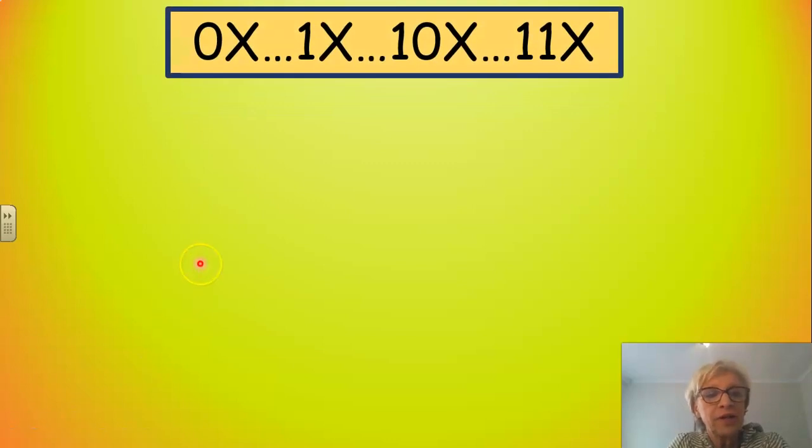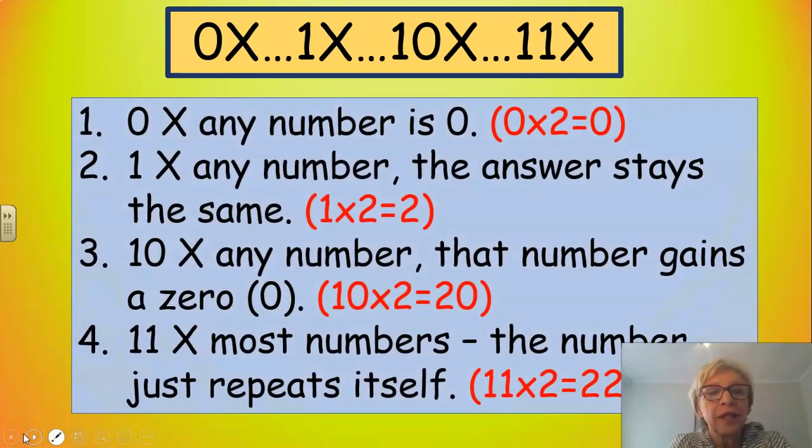So to summarize, multiplying by 0, 1, 10, and 11. This is pretty much what we have discovered. If you multiply any number by 0, its answer is 0. For instance, 0 times 2 is 0. If you multiply any number by 1, the answer stays the same. 1 times 2 is 2. Multiplying any number by 10, that number gains a 0. 10 times 2 is 20. And if you multiply most numbers by 11, the number just repeats itself. For example, 11 times 2 is 22.